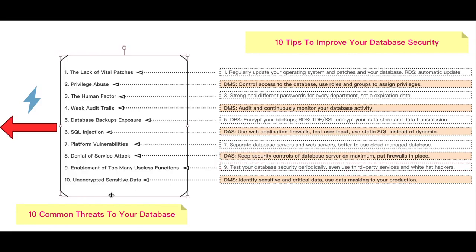The last one: unencrypted sensitive data can lead to data breaches, and you might suffer reputation and financial damages. DMS (Data Management Service) on Alibaba Cloud can be used to identify sensitive and critical data, and even supports data masking. This technique is especially recommended for databases that are part of a testing and development environment, because it allows you to preserve the logical structure of your data while ensuring that sensitive client information is not available outside the production environment.